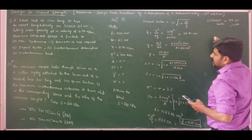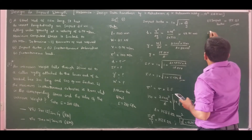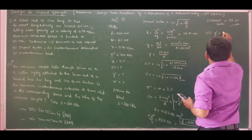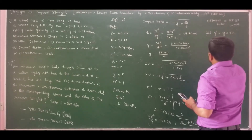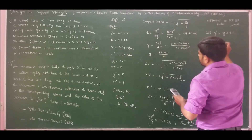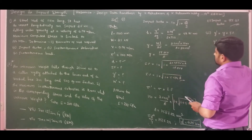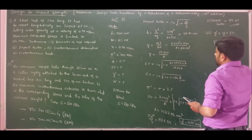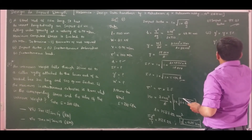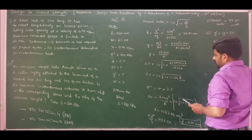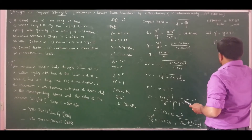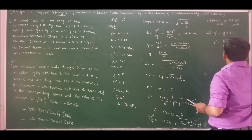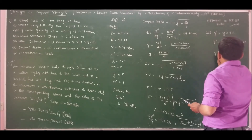Next, we determine the instantaneous deformation. Instantaneous deformation y-dash equals static deformation into impact factor. Static deformation is 17.857 divided by area 1587.22. Multiplying by impact factor 95.23 gives the instantaneous deformation.